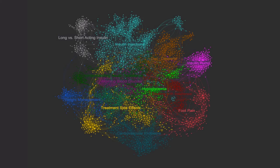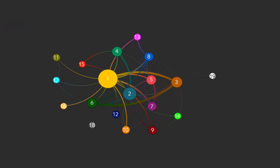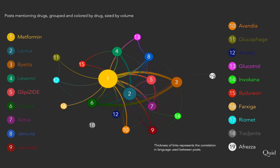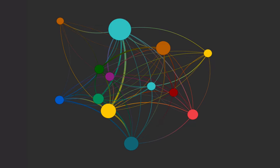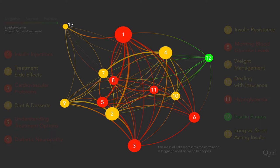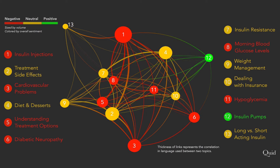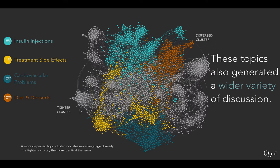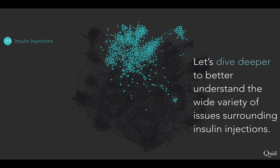In the software, we also aggregated the data to reveal which brands and drugs diabetes patients discuss. When we colored the data by sentiment, we found that patients struggle with issues like cardiovascular problems and hypoglycemia.